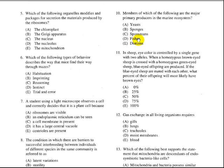Question number 11 says, in sheep, eye color is controlled by a single gene with two alleles. When a homozygous brown-eyed sheep is crossed with a homozygous green-eyed sheep, blue-eyed offspring are produced. If the blue-eyed sheep are mated with each other, what percent of their offspring will most likely have brown eyes? Well, that question is different than Mendelian questions or Mendelian mating. Because Mendel discussed dominant and recessive traits, but he didn't discuss this way of crossing, of having a third color which is a combination of both, or is co-dominant, or we can say it's the result of mating both of them.